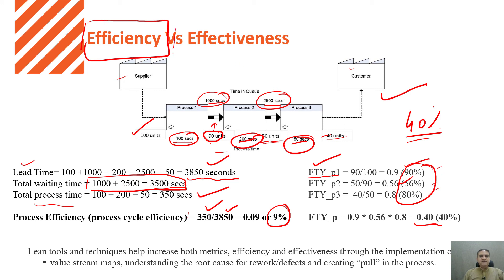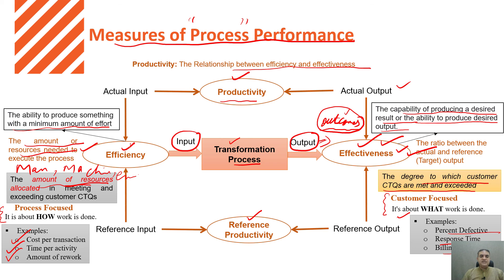In order to improve efficiency and effectiveness, we can apply different tools and techniques such as Lean and Six Sigma. I hope you got the idea of what efficiency, effectiveness, and productivity are, and how we can calculate them. Similarly, you can calculate the efficiency of your manpower using man-hours, or with respect to machine or energy resources. Effectiveness is purely related to your critical-to-quality requirements — whether we are able to achieve the target as per the defined customer expectation or not. Thank you so much, see you in the next video.